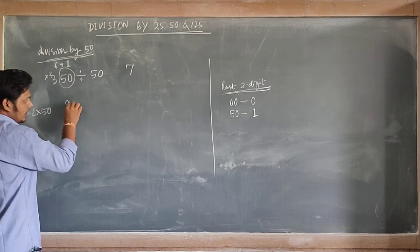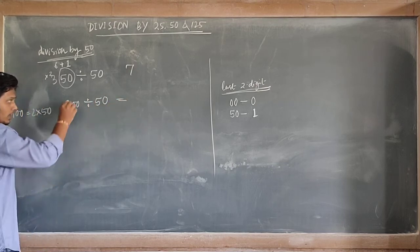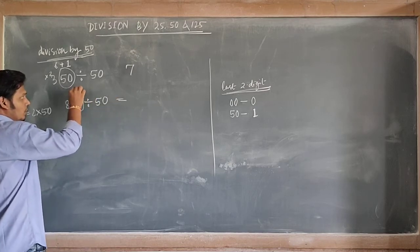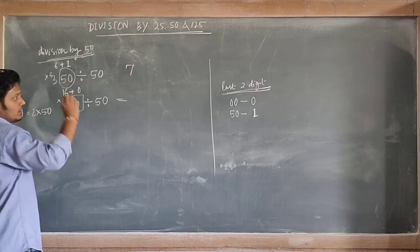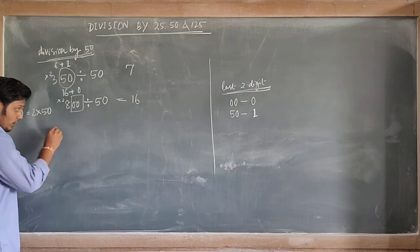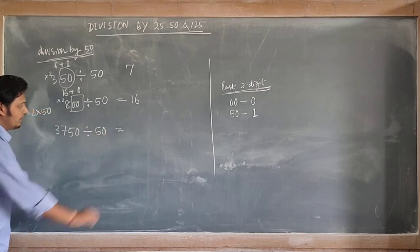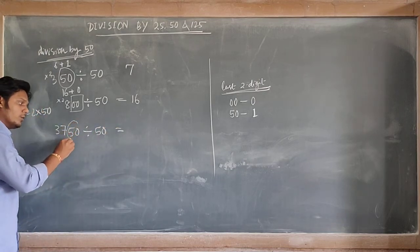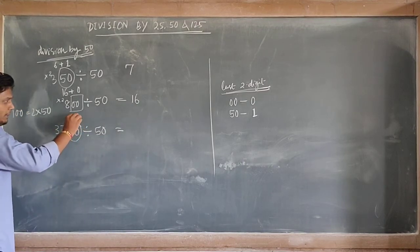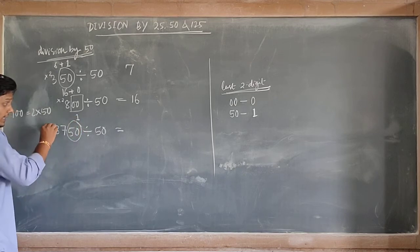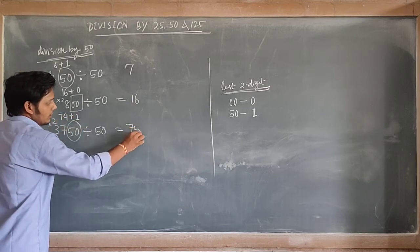Suppose 800 divided by 50. Separate the last two digits: 00, so we take 0. Multiply 8 by 2 to get 16. Then 16 plus 0 — your answer is 16. Now suppose 3750 divided by 50. Separate the last two digits: 50, so we take 1. Multiply 37 by 2 to get 74. Then 74 plus 1 — the answer is 75.